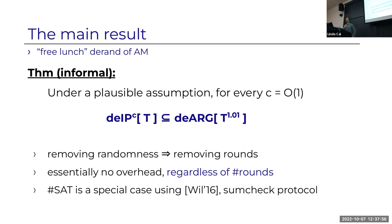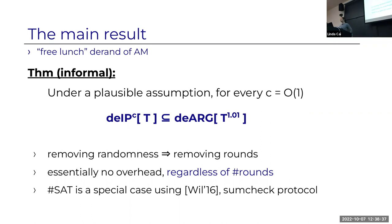As a consequence we remove all interaction, and removing randomness is stronger than removing interaction. There is no overhead regardless of the number of rounds. The Sharp-SAT result is just a special case: there's a proof system by Williams implementing the sumcheck protocol carefully with tricks that speed up Sharp-SAT by extending the number of rounds. To count satisfying solutions with 1/epsilon rounds, you can do it in time two-to-the-epsilon-n. Plug in this result and you get an argument system running in time two-to-the-epsilon.